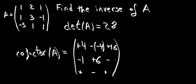We move on to this element here, second row, third column, we have a minus 1. The minor is going to be anything not on that row, that column. That is going to be this 1, 2 on the first row, minus 5, 1 on the third row. 1 times 1, minus 2 times minus 5, which becomes a plus, so that is going to give us an 11 here.